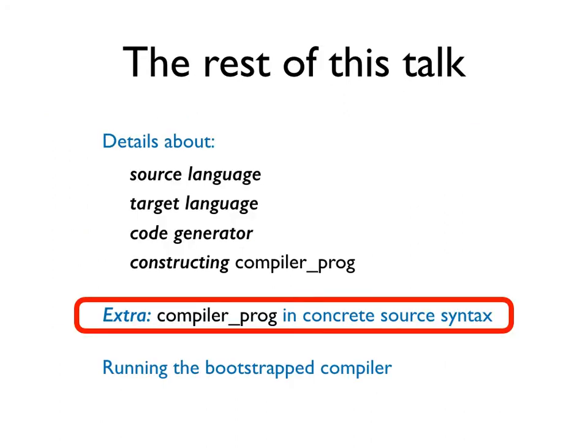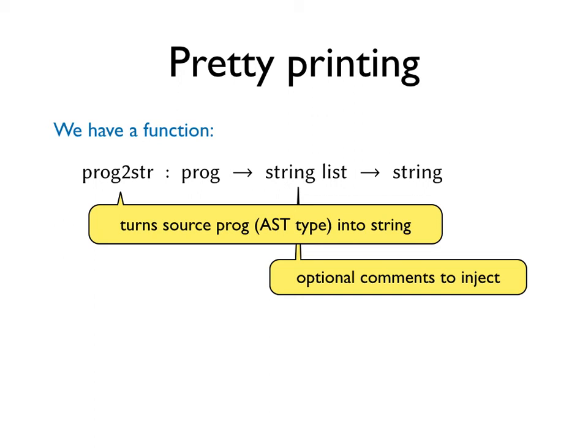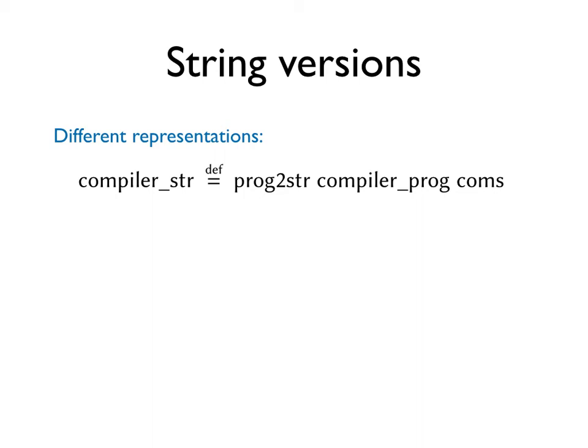Let's move on to an amusing extra. We have a function that converts a source AST into readable concrete syntax. For this function, we have proved that lexing and then parsing its output returns the original AST. With this PROG_TO_STR function, we can define a readable text version of COMPILER_PROG, which goes nicely with the other representations that we already have for COMPILER_PROG.